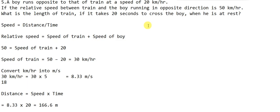Now the second question: a boy runs opposite to a train at a speed of 20 km/h. The relative speed between the train and the boy running in the opposite direction is 50 km/h. What is the length of the train if it takes 20 seconds to cross the boy when he is at rest? Since they move in opposite directions, we add speeds: 50 = speed of train + speed of boy, so speed of train = 50 − 20 = 30 km/h.